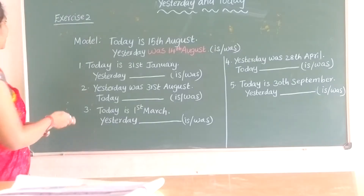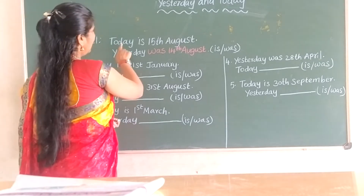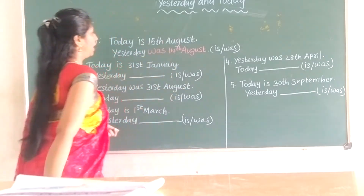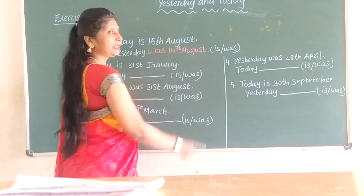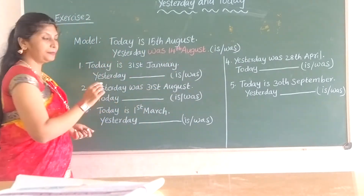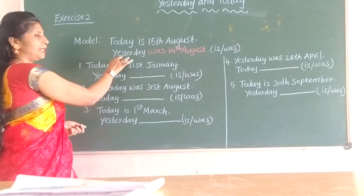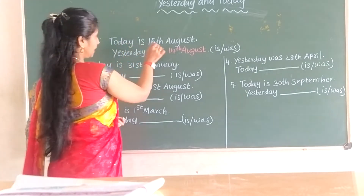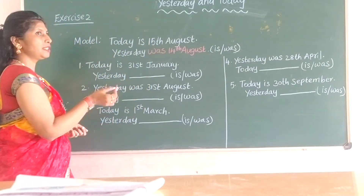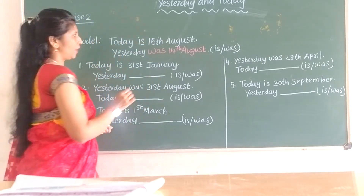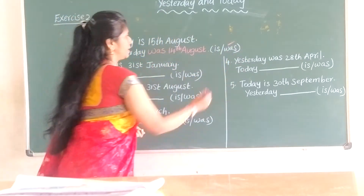Next, exercise 2. Model: Today is 15th March, yesterday was 14th March. Okay? Today means 'is', yesterday means 'was'. Today is 15th August, yesterday was 14th August.